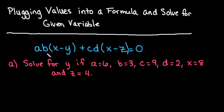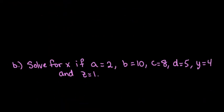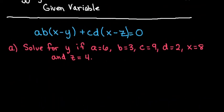So what we have is a times b times the quantity x minus y plus c times d times the quantity of x minus z equals 0. And I'm going to go through a couple of scenarios where we solve for two different variables. The first one we're going to solve for y and in the second example we're going to solve for x.